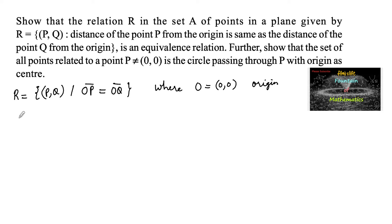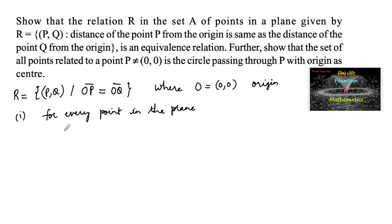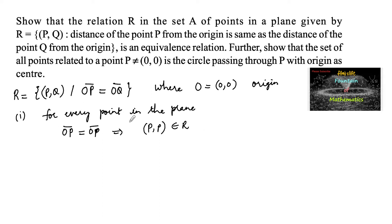To prove that R is an equivalence relation, first we consider reflexivity. For every point P in the plane, we know that the distance of P from the origin is same as the distance of the same point from the origin, that is OP = OP. This implies that (p, p) belongs to R. Hence R is reflexive.